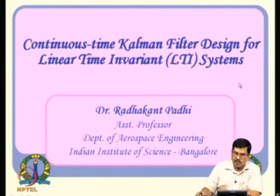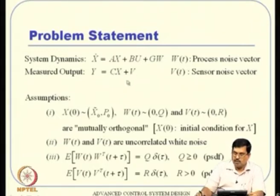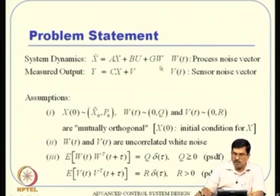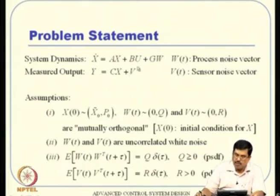For continuous-time Kalman filter design for a linear time-invariant system, the system dynamics are: x_dot = A*x + B*u + G*w, and the measurement equation is y = C*x + v, where w is the process noise vector and v is the sensor noise vector. The process noise w directly affects the system state, and since the measurement y is corrupted by sensor noise v, both affect the performance of the controller.